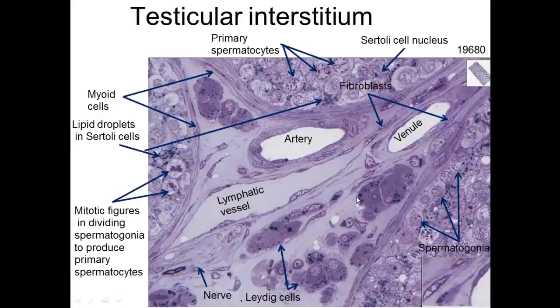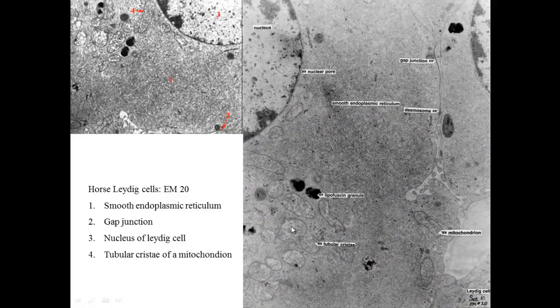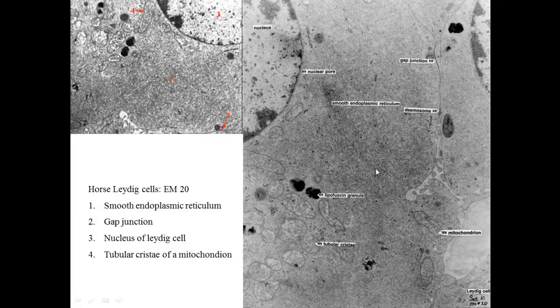If we look at the Leydig cell here, you can see it has a lot of smooth cytoplasm associated with it, and it also has some lipid. But if you look at that at the ultrastructure level, what you see is a smooth endoplasmic reticulum, some lysosome, some lipid, but there's a lot of smooth endoplasmic reticulum associated with it producing testosterone.